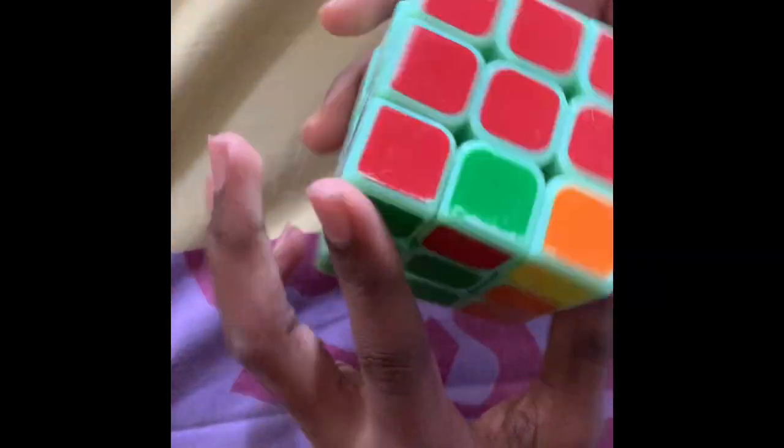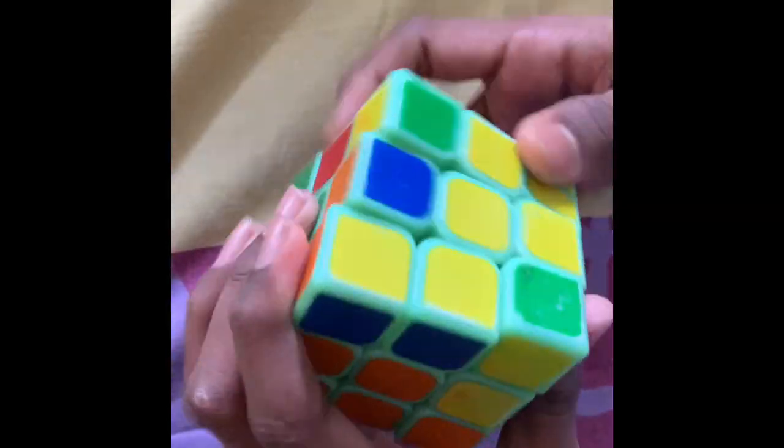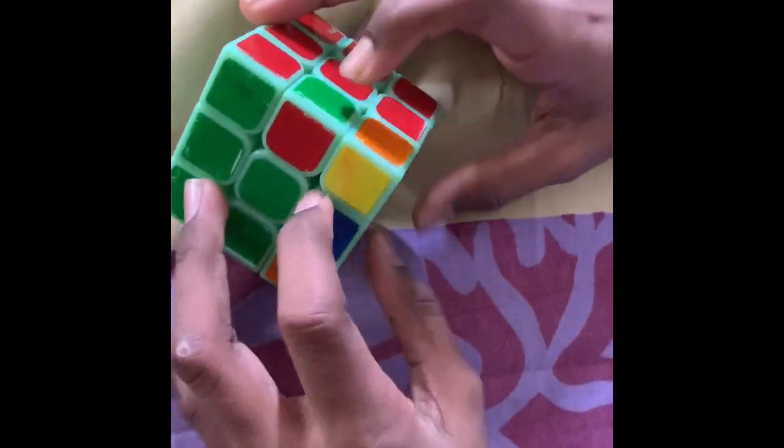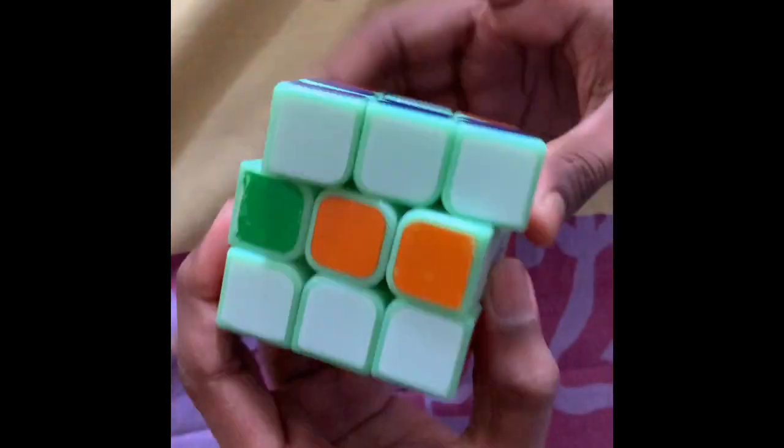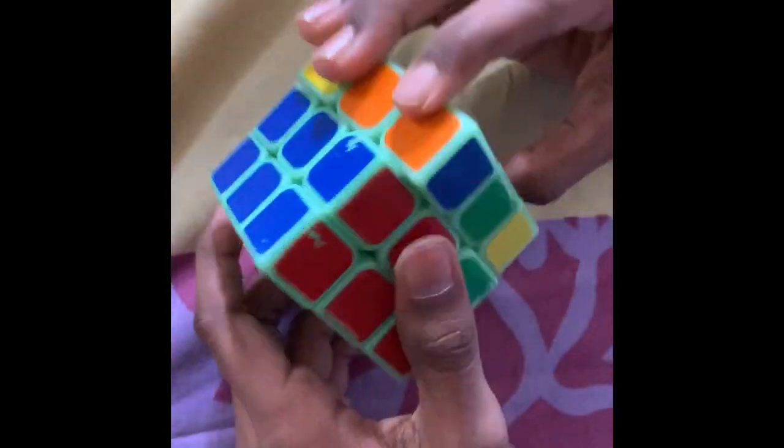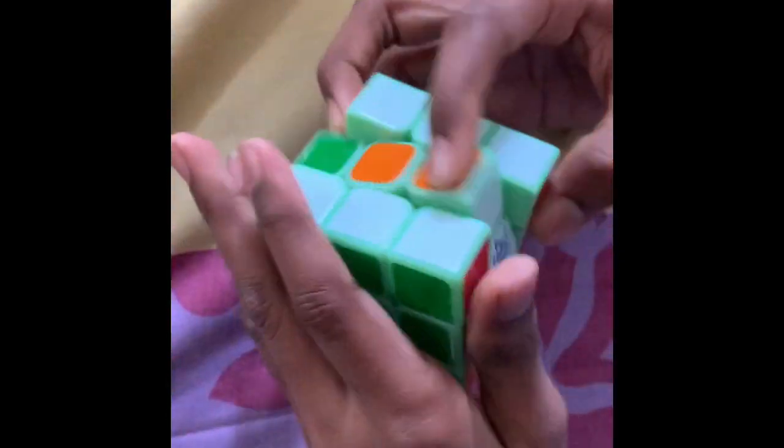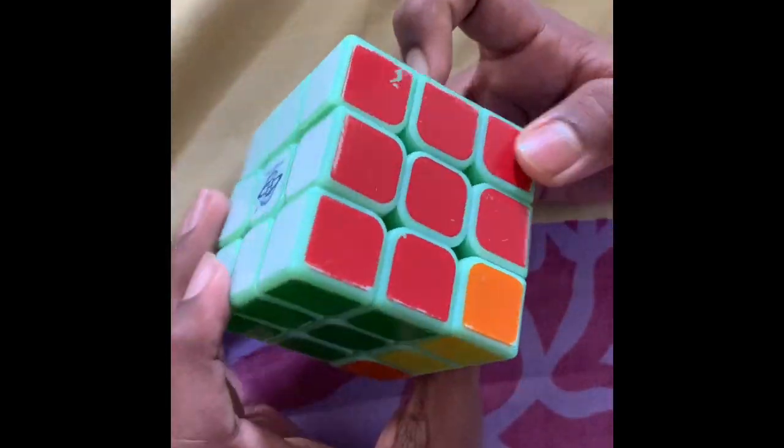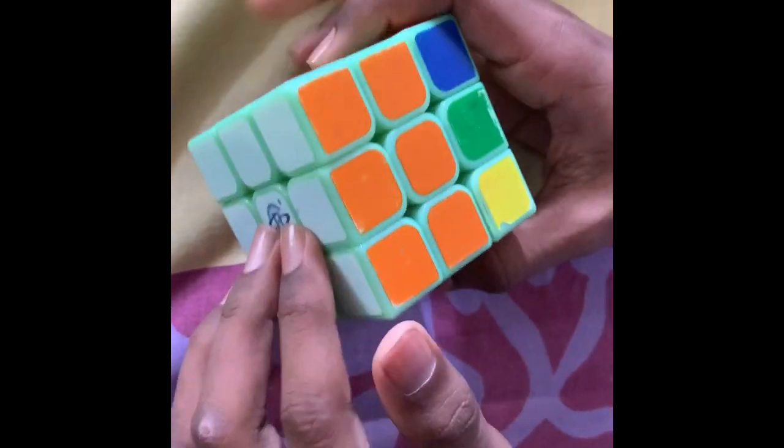We've done orange, red, green, and blue. So we have completed two layers now and one side is all white. Now we're on the last layer of the cube. We have one side white and the other sides have two colors already made.